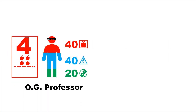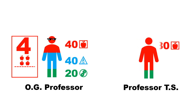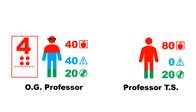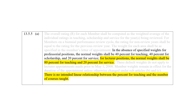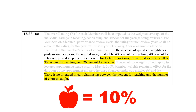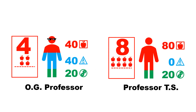Now that we have an OG professor model, I want to construct a model of a professor teaching stream. Their workload would consist of 80% teaching, 0% research, and 20% service. If we quite literally compare apples to apples, their teaching load will be 8. The 80-20 comes directly from the MOA. It is interesting to point out that in that same section of the MOA, it states there is no intended linear relationship between the percent for teaching and the number of courses taught. However, my goal is to be objectively balanced and fair, and so I will continue to use this 10% rule of thumb.